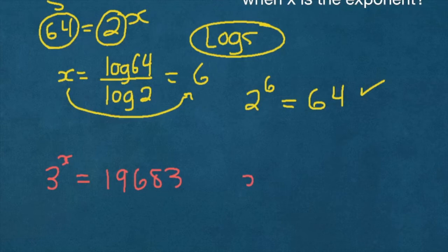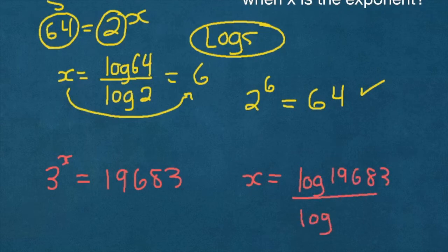So instead I'm going to use the logs. So from what I showed you, x is equal to, you take the log of the number that's standing alone, so 19,683, over the log of the number that's attached to the x, which is 3. And done properly, you will find that x here is equal to 9. And if you check your work, if you do 3 to the power of x, or 3 to the power of 9, you will get this much.